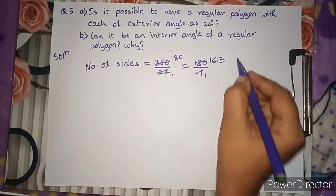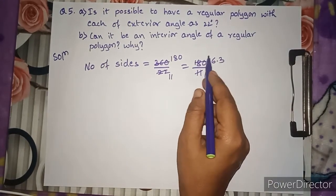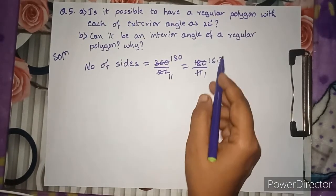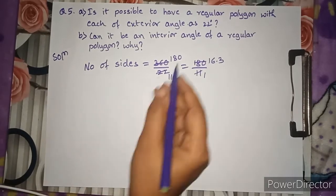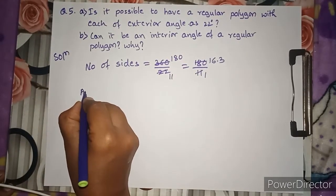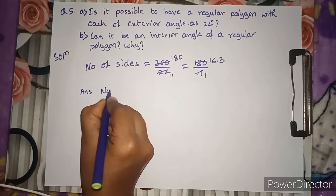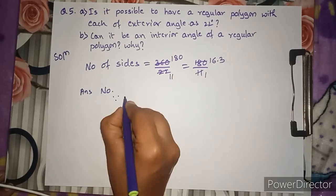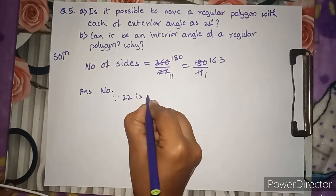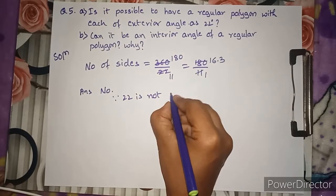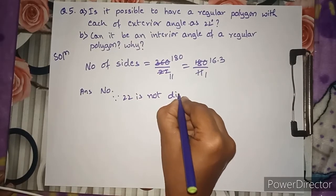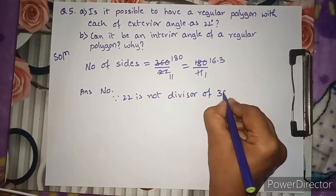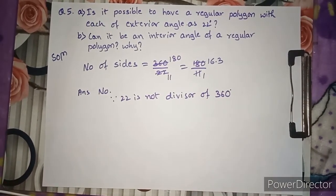The result is approximately 16.3, which is not completely divisible. The number of sides must be a whole number. Therefore, the answer is no, because 22 is not a complete divisor of 360.